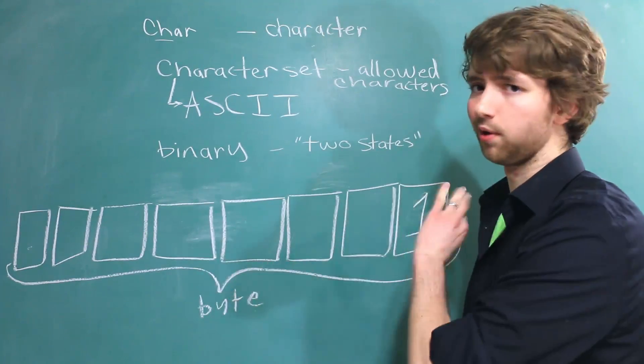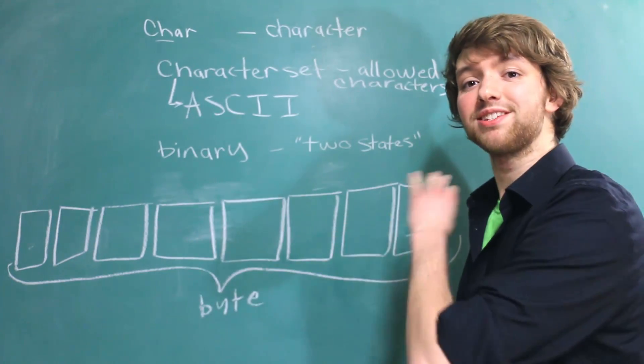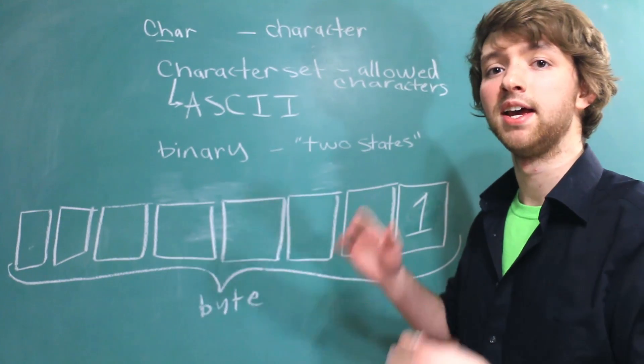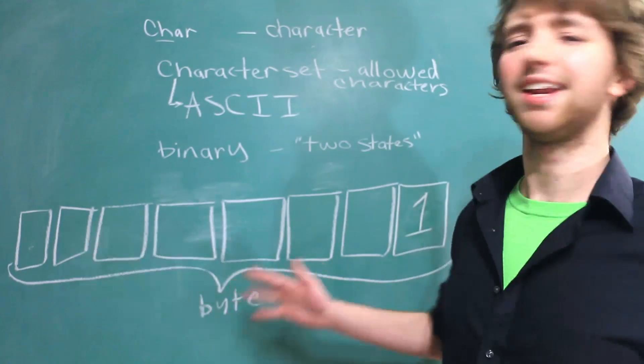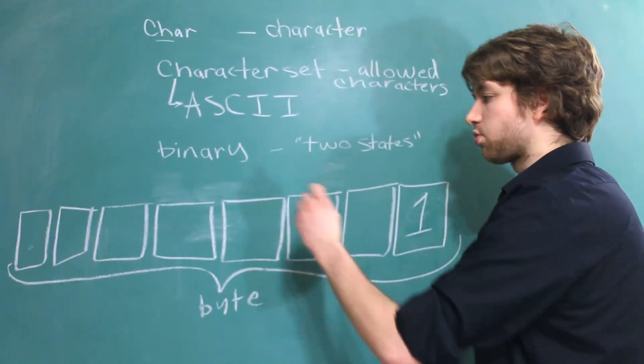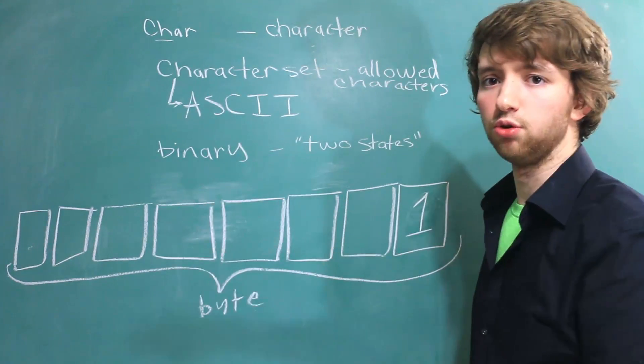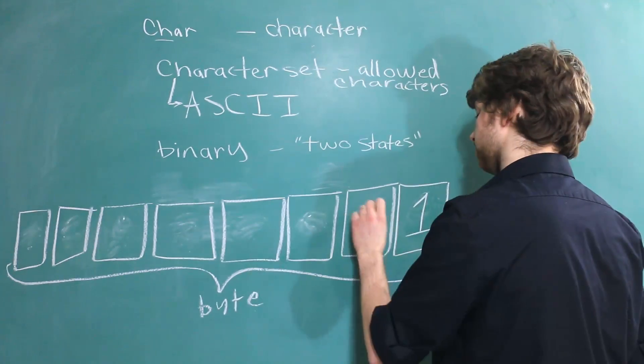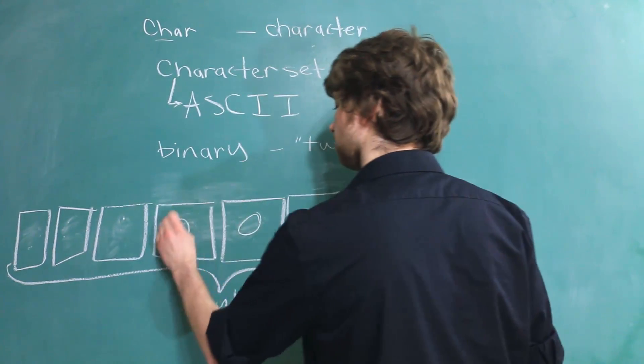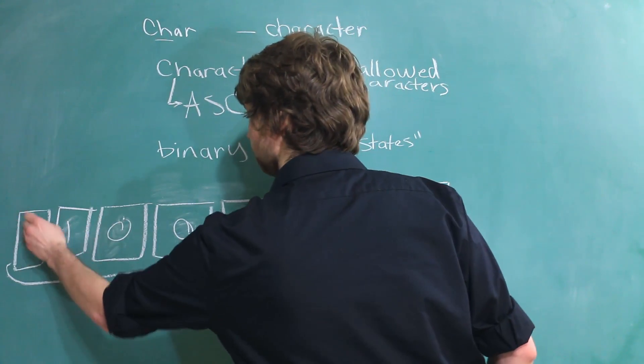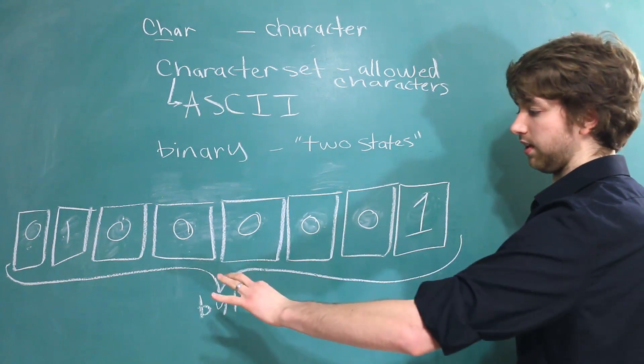You're probably wondering why I'm going into all this stuff. Trust me, this is very useful when it comes to understanding data types and data in C programming and any programming language. So, each one of these bits can have a value of either zero or one. So, we could say zero, zero, zero, zero, one, zero. This is just an example. You could fill it up however you wanted.